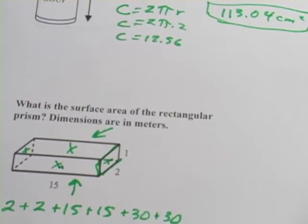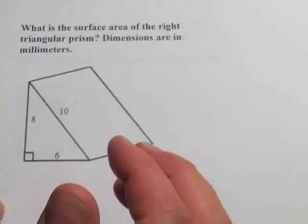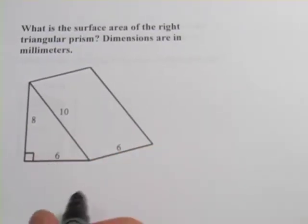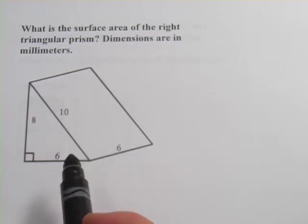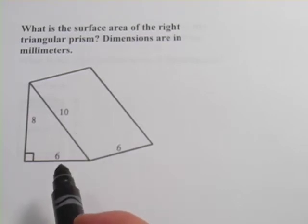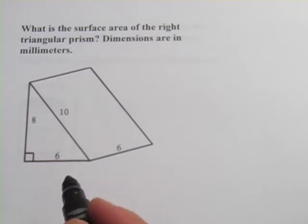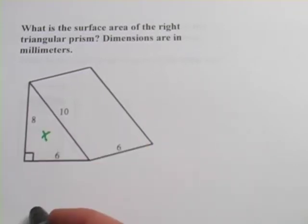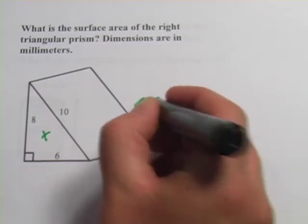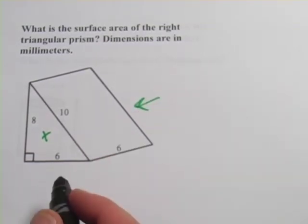All right, one more. This one's a little tricky if you haven't seen it before, too. It says, what is the surface area of the right triangular prism? Dimensions are in millimeters. And again, you want to think about the sides that you can't see. We see this triangular side over here, but there's one exactly like it over here. So let's do those two sides first.